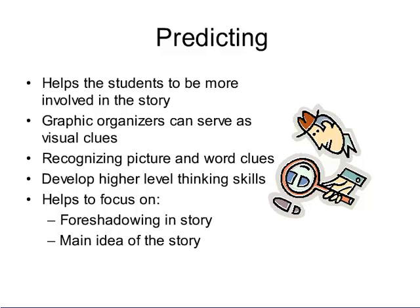The first strategy is predicting. Predicting helps students to become more involved in the story. Teachers can use graphic organizers, which can serve as visual clues to help students. Predicting teaches students to recognize picture clues and word clues found in the story or text they are reading. It also helps them develop higher-level thinking skills and helps focus on the foreshadowing and main idea of the story.